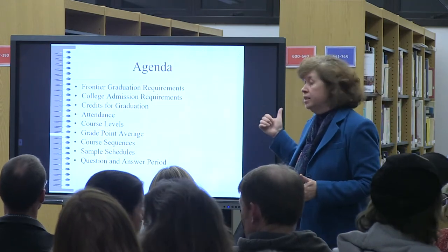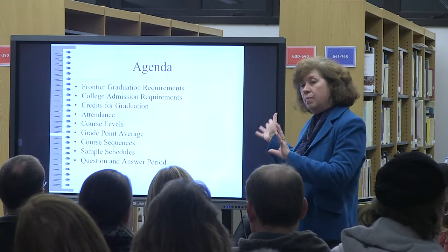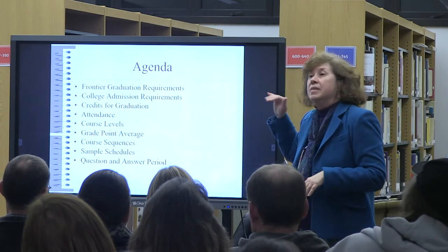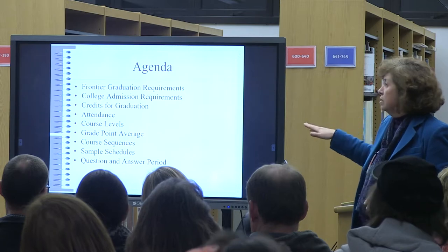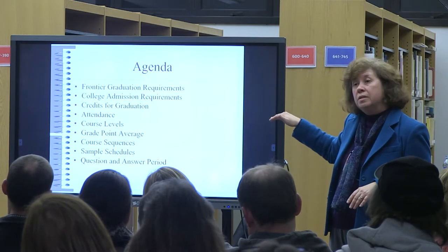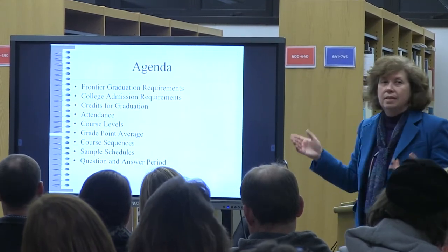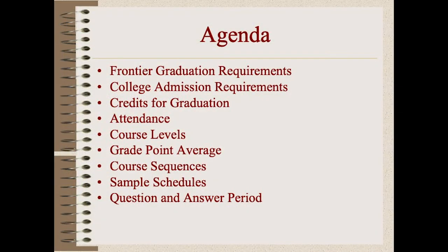Tonight I'm going to cover Frontier graduation requirements, how that corresponds with college admissions requirements, credits for graduation, the attendance policy, course levels, grade point averages, and course sequencing in the variety of departments. I'm going to show some sample schedules and obviously take questions. If there's something that doesn't make sense to wait until the end, feel free to raise your hand. I'll also take personal questions at the end on an individual basis if it's not something you want to discuss in a group format.